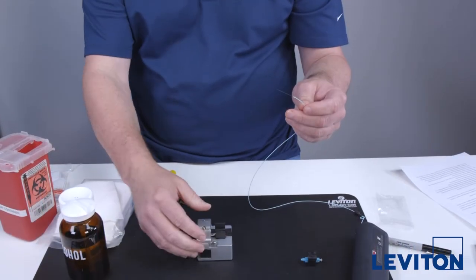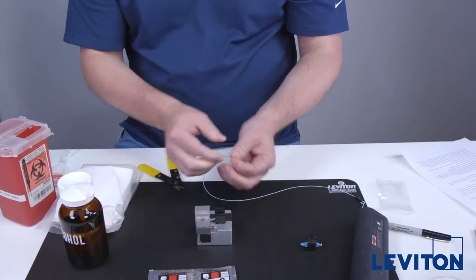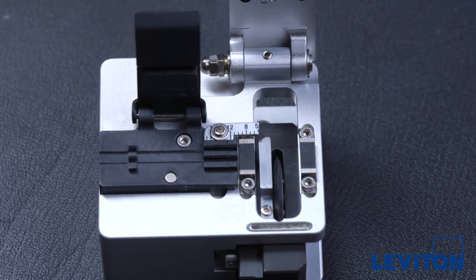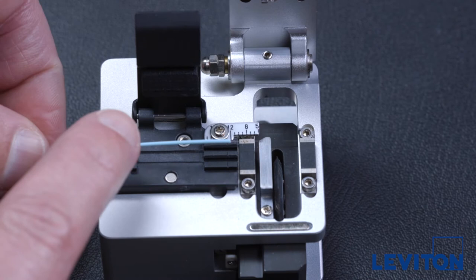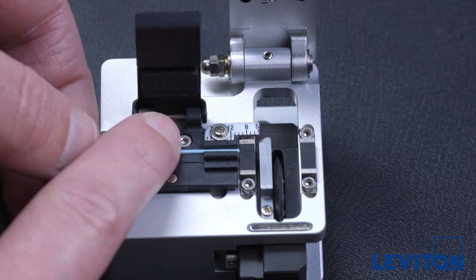Open both fiber doors and slide the blade to the forward position. Position the fiber in the large groove closest to the door hinge with any curvature oriented downward.